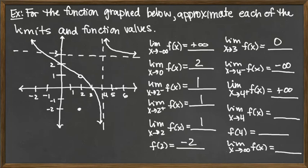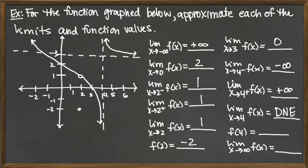For the full limit as x goes to 4, we look at the two one-sided limits and see if they match. One is negative infinity and one is positive infinity — those don't match. So the limit does not exist. As for the function value at 4, we see there's a vertical asymptote and no solid dot at all at 4. So that function value also does not exist.